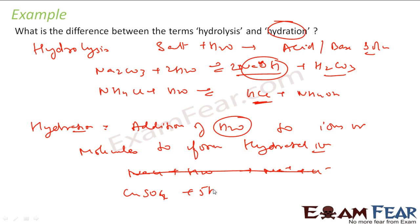CuSO4 plus 5H2O, if you add, this becomes CuSO4·5H2O. This is blue in color, this is white in color.